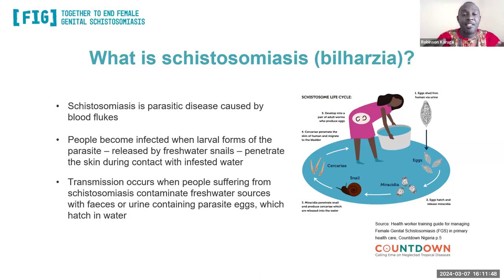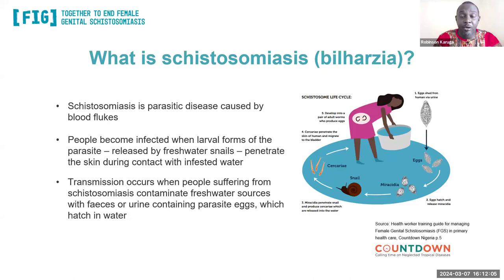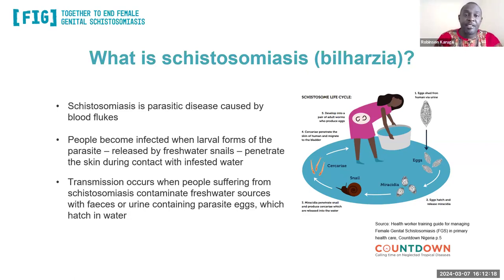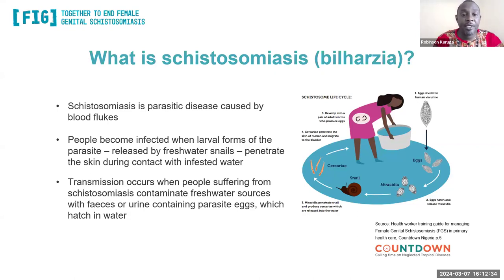After a few weeks, the more developed larval stage of this worm exits the snail and penetrates and infects humans who come into contact with this contaminated fresh water through the skin. There are two types of bilharzia: the intestinal form, where eggs are released through the stool, and the urinary schistosomiasis, where eggs are passed through the urine. This life cycle happens especially in places that do not have adequate water and sanitation facilities.